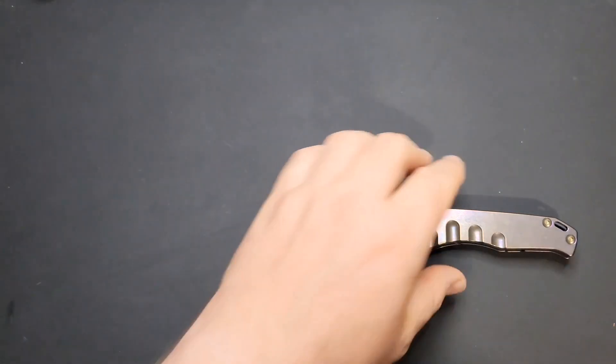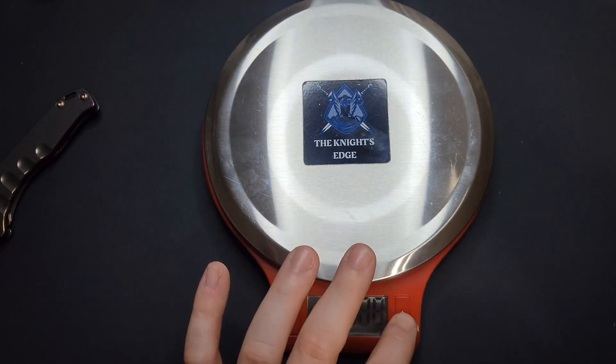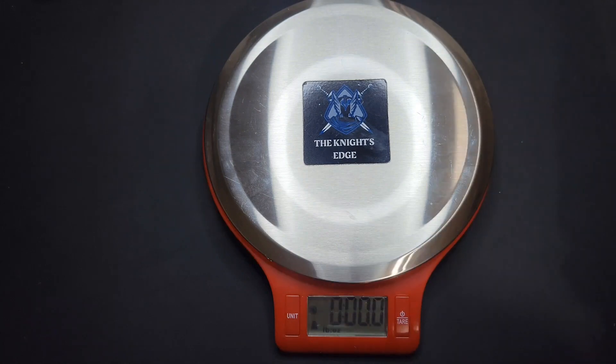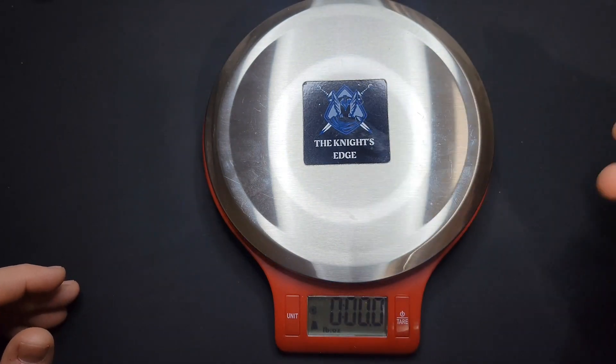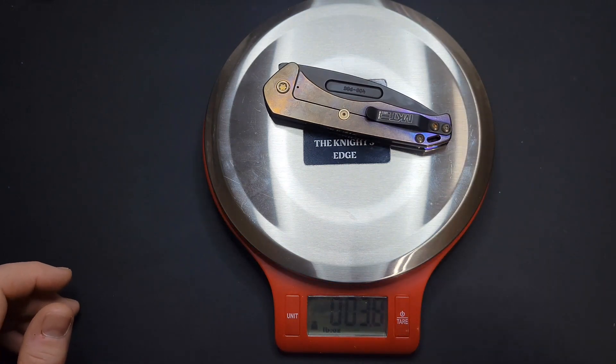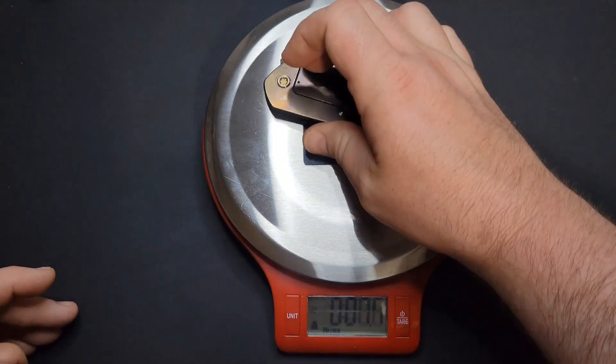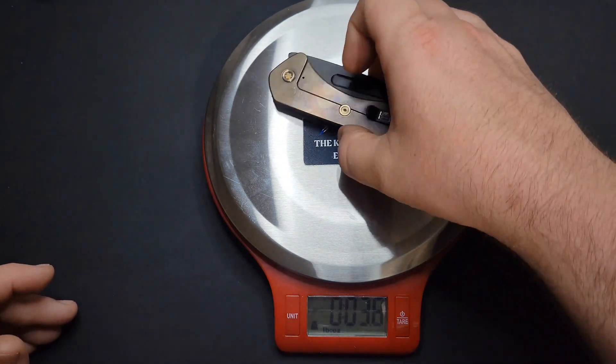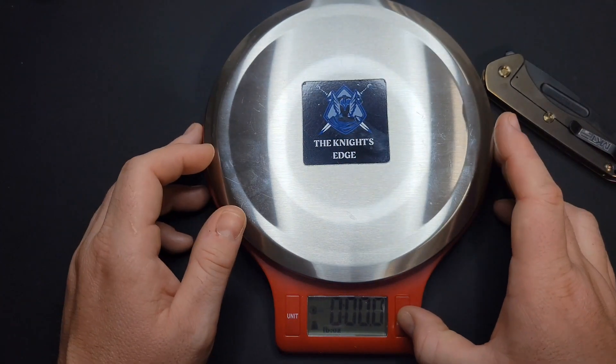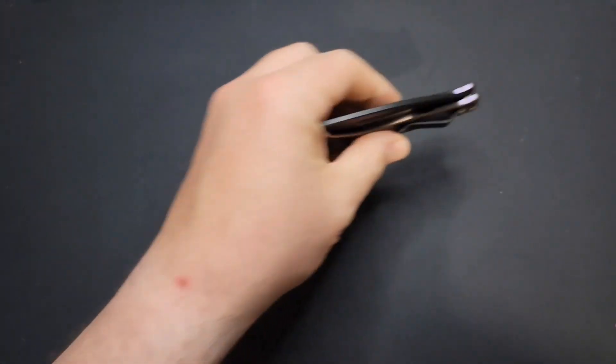Let's get the scale out. See what we're dealing with for weight here. 3.8 ounces. So a little over the ounce an inch rule of thumb, but not too far over. Not really an issue there. It looks like it's heavier than it is to me anyway.